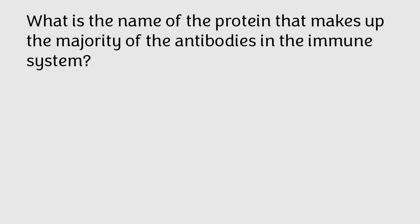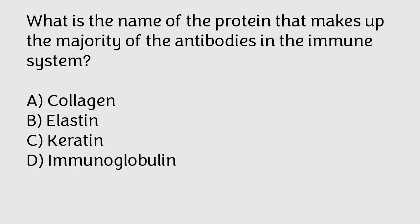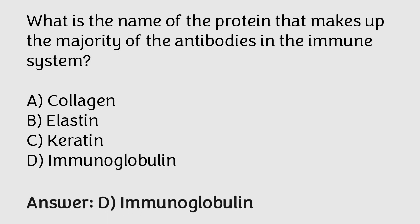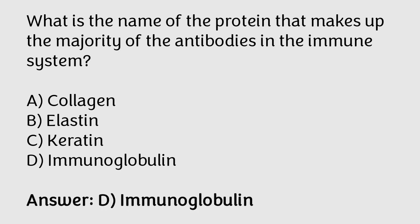What is the name of the protein that makes up the majority of antibodies in the immune system? Collagen, elastin, keratin, immunoglobulin. The correct answer is option D. Immunoglobulin is the name of the protein that makes up the majority of the antibodies in the immune system.